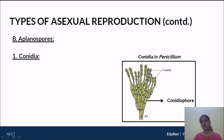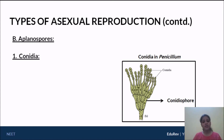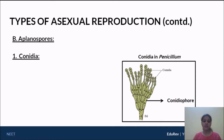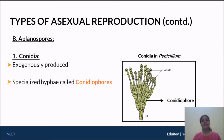Looking at the structure of this particular fungus, these protruding structures are hyphae. But these are a very specialized type of hyphae called a conidiophore. On this conidiophore, you can see spores being formed on the external surface — they are produced externally. So we can say that conidia are exogenously produced on specialized hyphae called conidiophores.